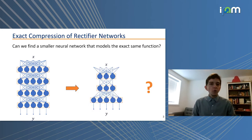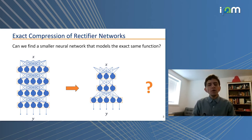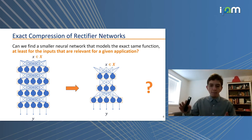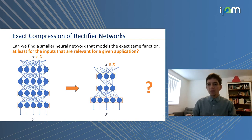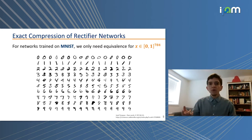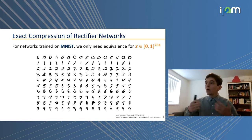The question we're interested in is whether we can find a neural network with fewer neurons and perhaps fewer layers that establishes the same mapping from X to Y. To make this question easier — especially given that having bounded inputs helps with optimization — what if we consider equivalence only with respect to inputs relevant for a given application? For example, with the MNIST dataset of 28×28 handwritten digit images, each pixel value is between zero and one, so we don't need to worry about inputs outside that range.